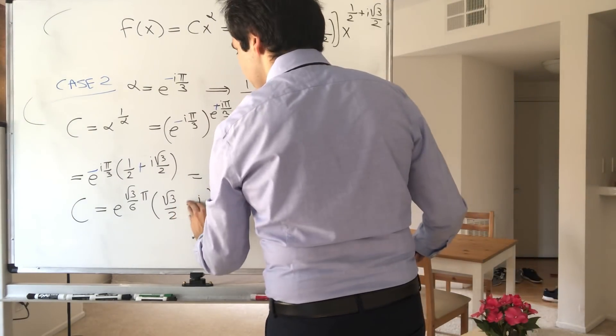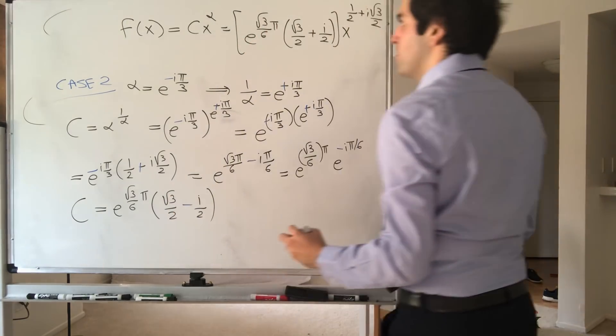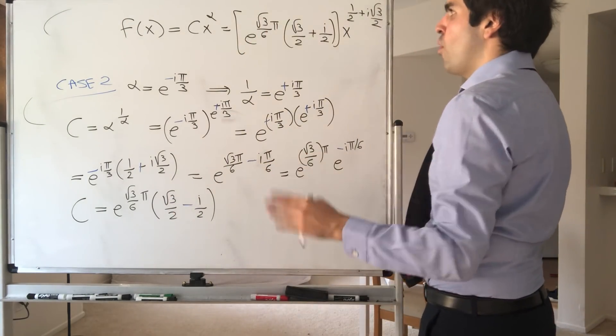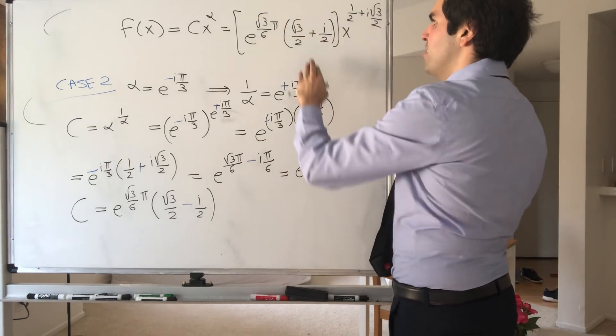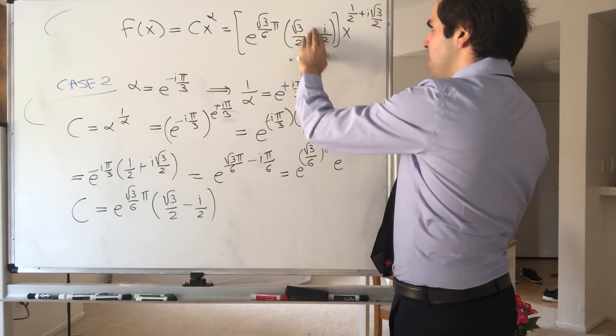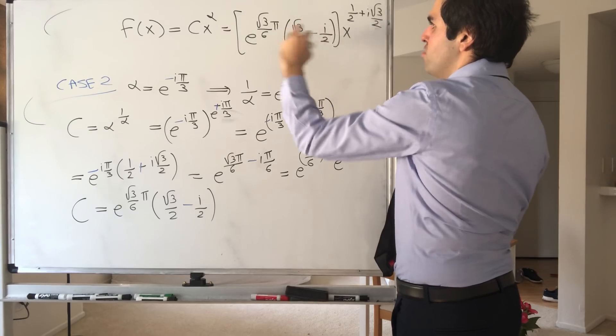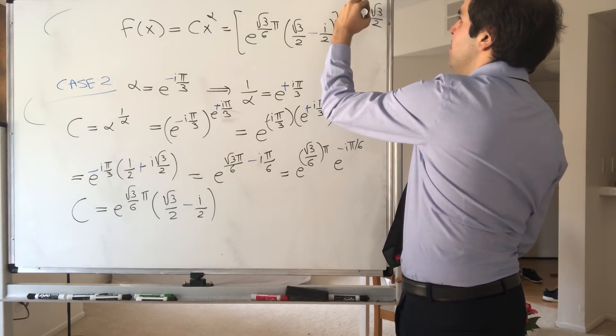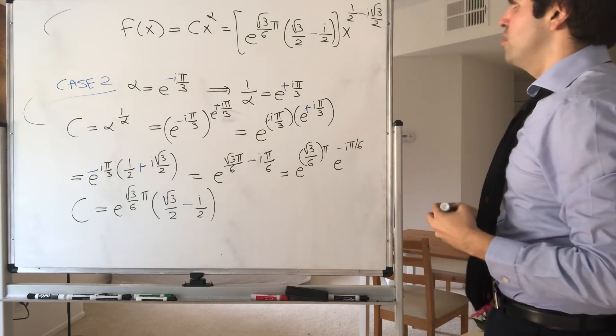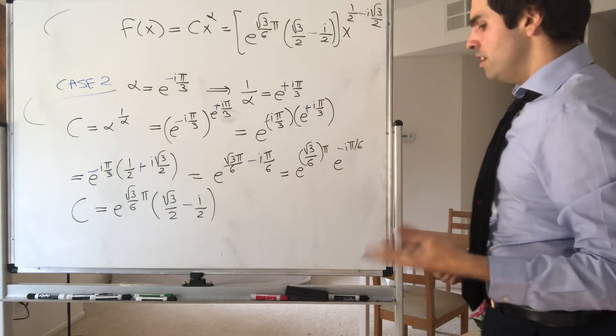So interestingly, this still becomes plus, but then this becomes minus. So e to the minus i pi over 6. And then cosine is still the same, and here you get minus. So therefore, here you get, again, I think it's just a complex conjugate, but you get just this, e to the square root of 3 over 2 minus i over 2, and e to the minus i square root of 3 over 2.